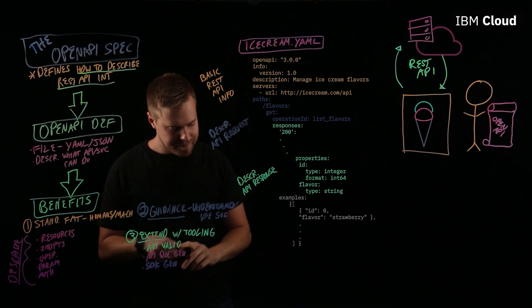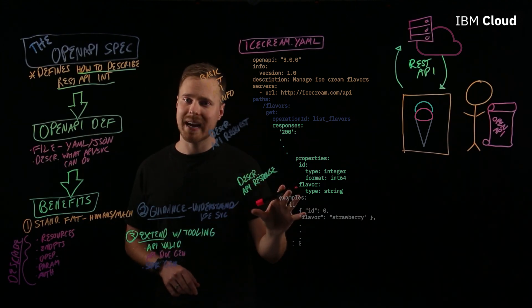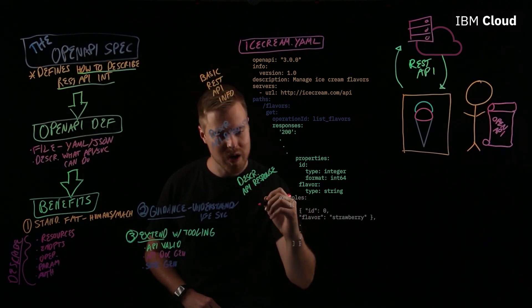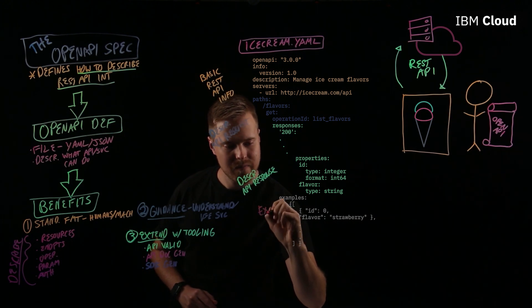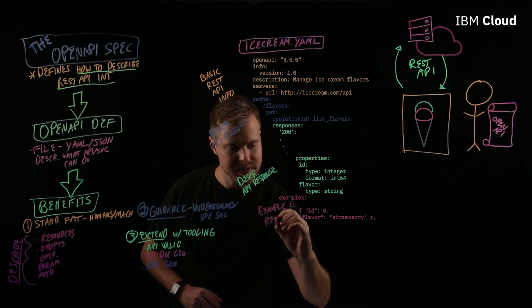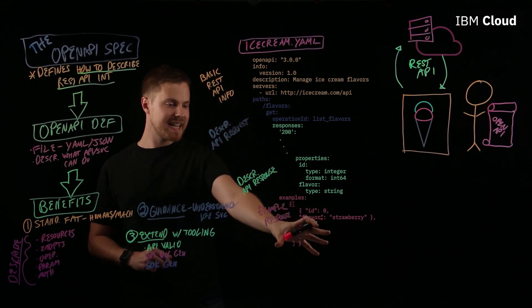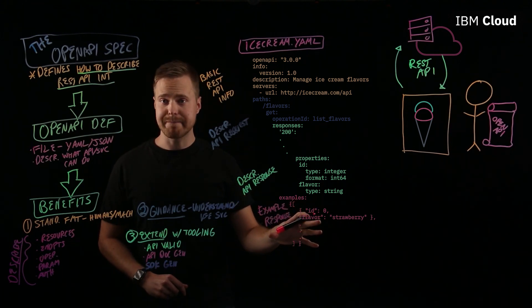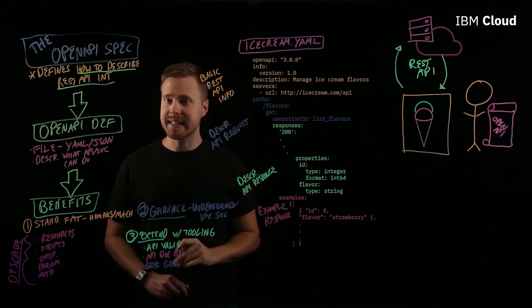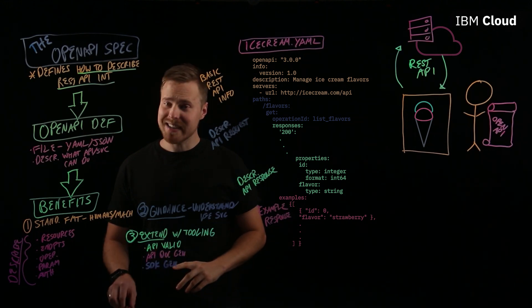And then lastly, the OpenAPI definition could have a section for an example response. So, it'll actually have sample data for you to look at when you're referencing the OpenAPI definition.